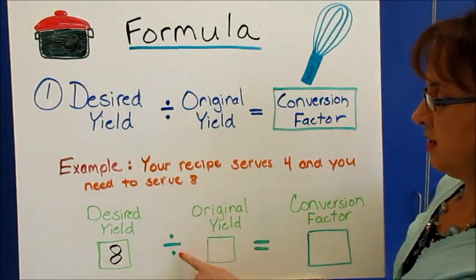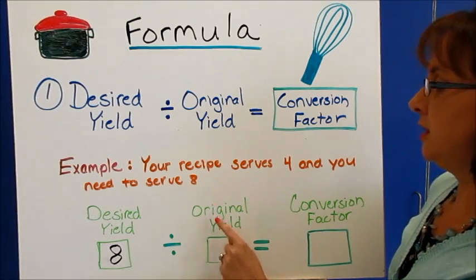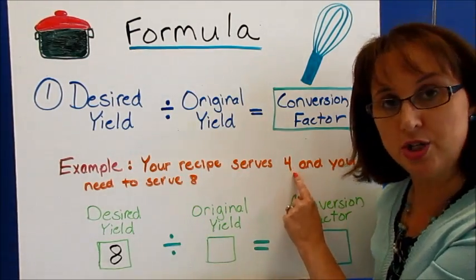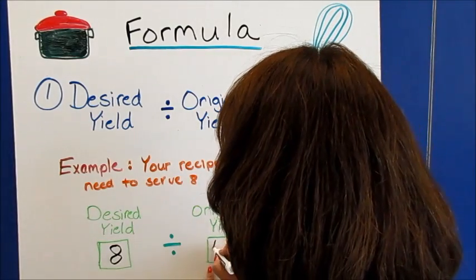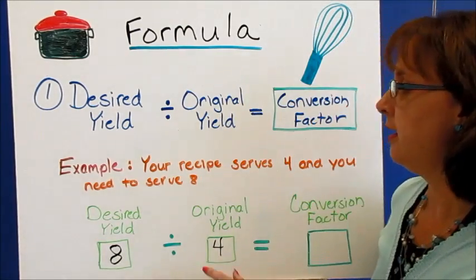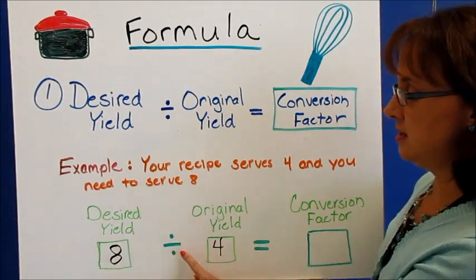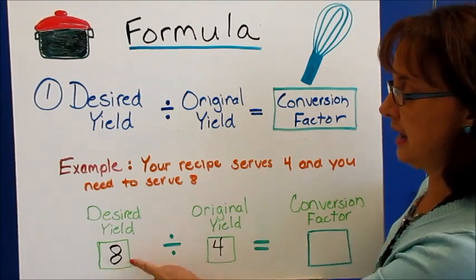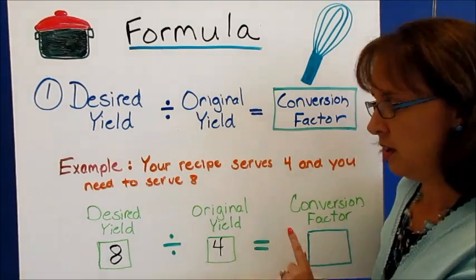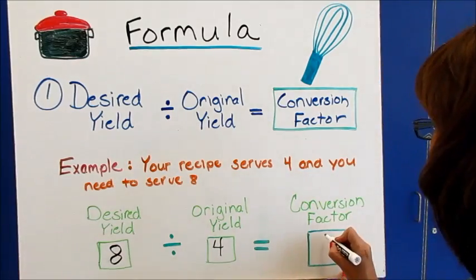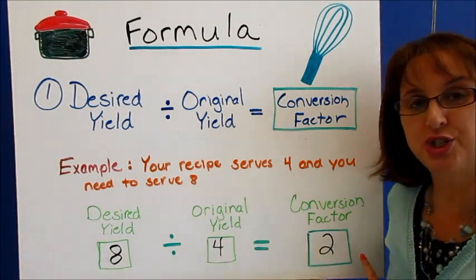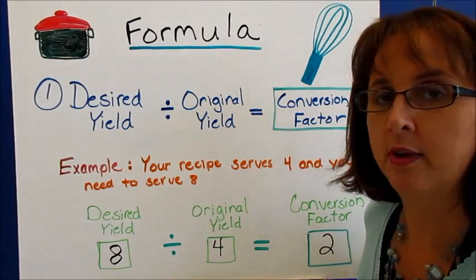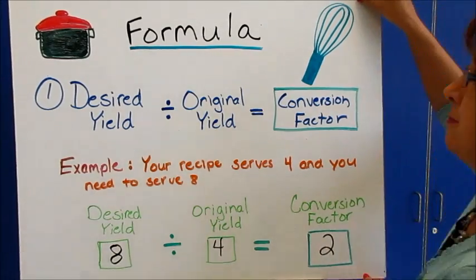We're going to divide that by our original yield. Our recipe serves four, so that's what it was originally, so we put four. We've got our desired yield divided by our original yield, which is eight divided by four. That means our conversion factor is two — eight divided by four equals two. That's the first step.